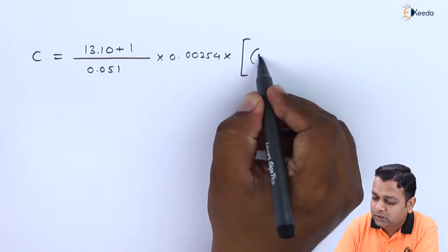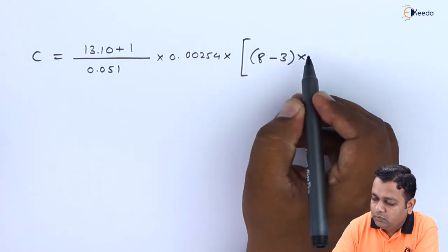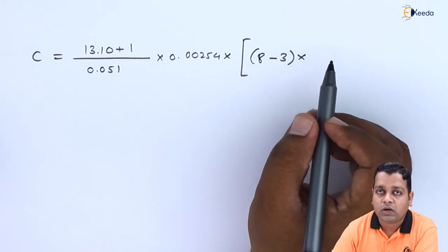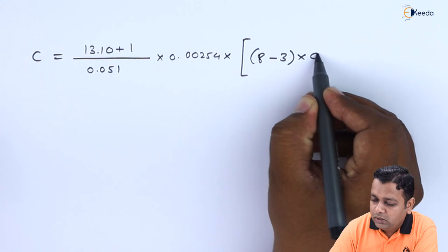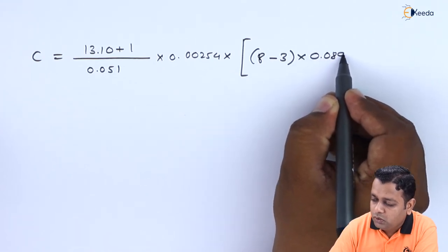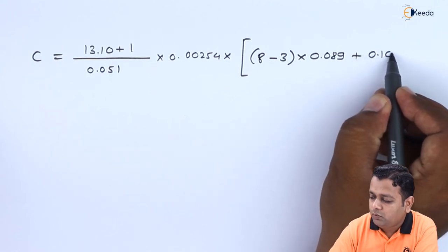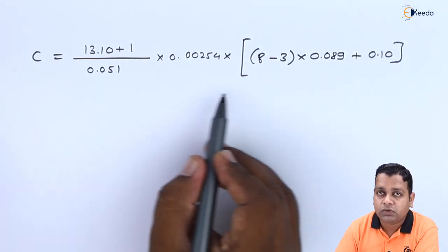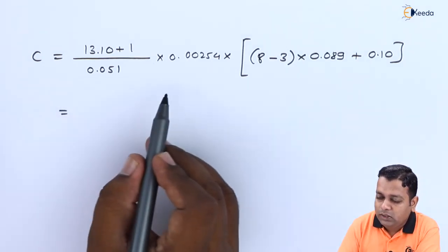We are provided the number of fingers is equal to 8. So it will be 8 minus 3 in multiplication to A1. So just now we have taken the values of A1 and A2. So here it is the bracket multiplied to 0.089 and added to A2 value that it is 0.10. So this completes the substitution of all the parameters into the RHS side here.